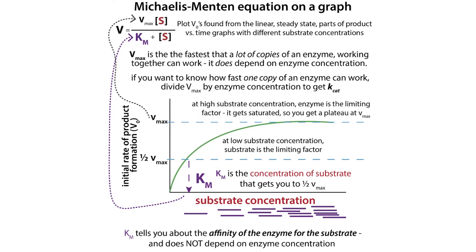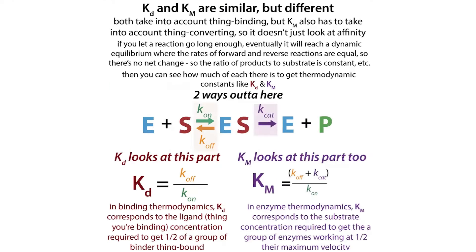The substrate concentration that it takes to reach Vmax relates to the Km. The more substrate you need in order to reach that, the weaker the affinity — basically saying that although there's a lot of sticks around, you don't really want to grab them, or if you grab them you let go pretty quick. So you need to keep running into those sticks and have them forced into your hands in order to do things. Your Km is going to be higher if you have weaker binding, and lower if you have tighter binding.